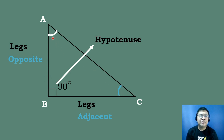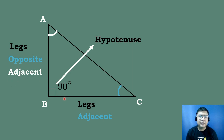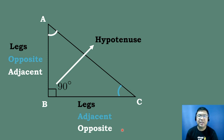Now, if the given angle is angle A, the side in between angle A and the right angle will be the adjacent side. And the side which is opposite angle A will be the opposite side, so segment BC will be the opposite side. That's how we identify the parts of our right triangle.